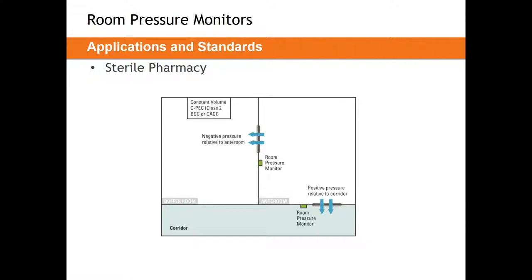The next type is a sterile compounding pharmacy. With sterile compounding, a few things change: we require 30 air changes per hour and we require an anteroom that is also 30 air changes per hour. Now that we have two spaces, we have a pressure cascade — pressure cascades from the buffer room to the anteroom and from the anteroom out to the corridor. The display goes right beside each doorway and the sensor right above the door. Measuring from corridor to anteroom and anteroom to buffer room is the most common approach.